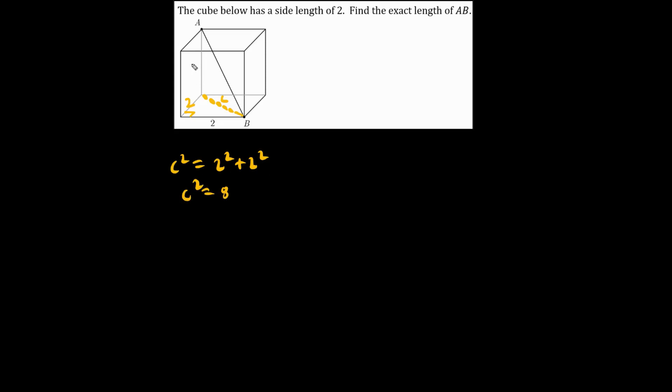Now this height is also 2. Let's solve for AB, which we'll call D, the diagonal. This here is also a right angle. We have D squared equals 2 squared plus C squared. But we already know what C squared is. It's 8. So D squared equals 4 plus 8, which is 12.